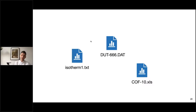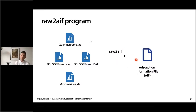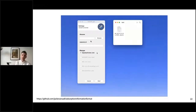Today you may have many different raw output files from adsorption experiments, and you could technically use a text editor to create the AIF yourself, but we noticed that's not a good use of your time. So we developed a program for Windows computers called 'Raw to AIF' which will convert Quantachrome, Belsorp Max, and Micromeritics files to the Adsorption Information File, taking as much information as it can from the raw output files to create a representative AIF.